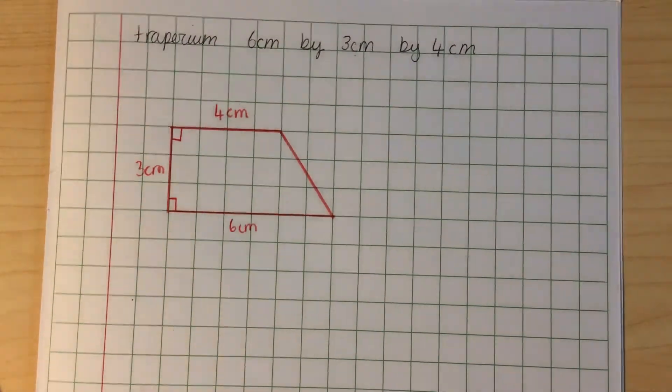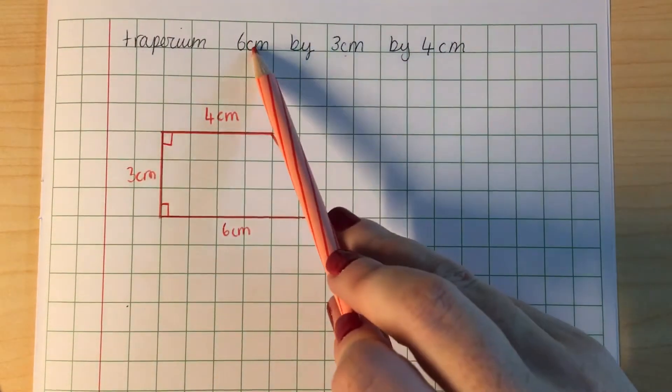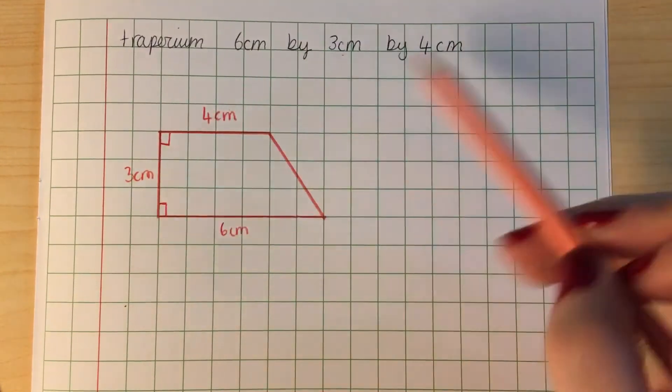And that is how we draw a trapezium. So remember the first number is the base, the second number is the side, and the third number is the top.